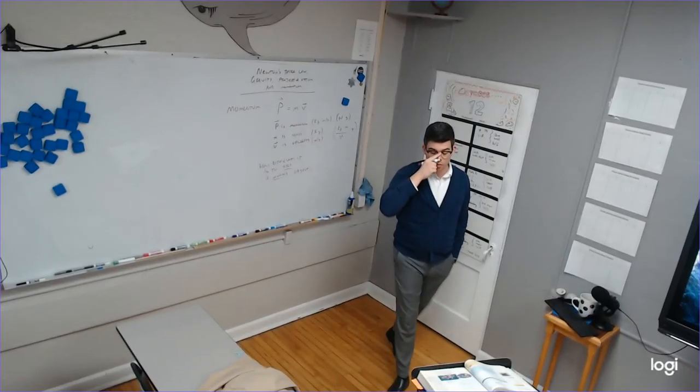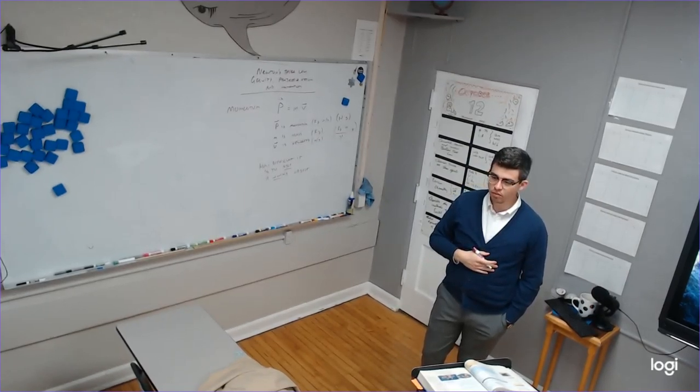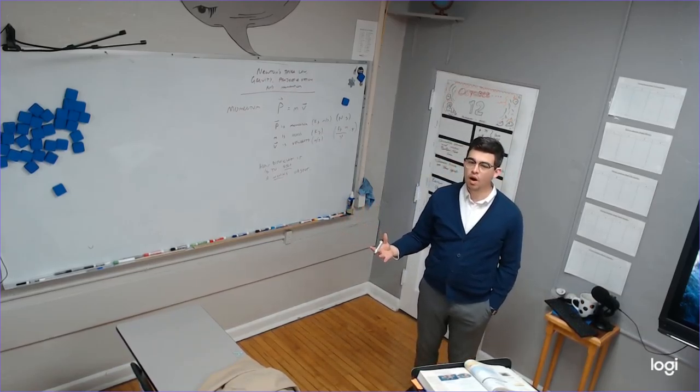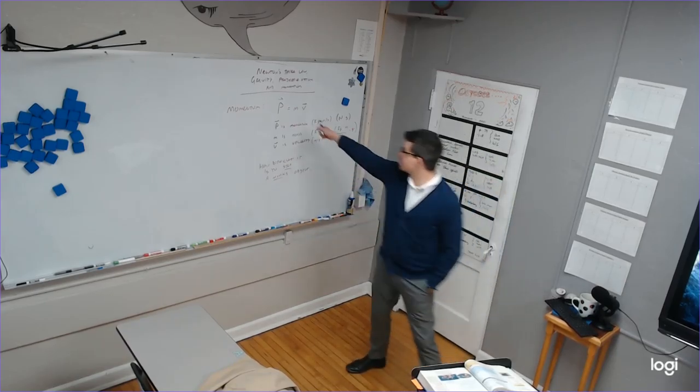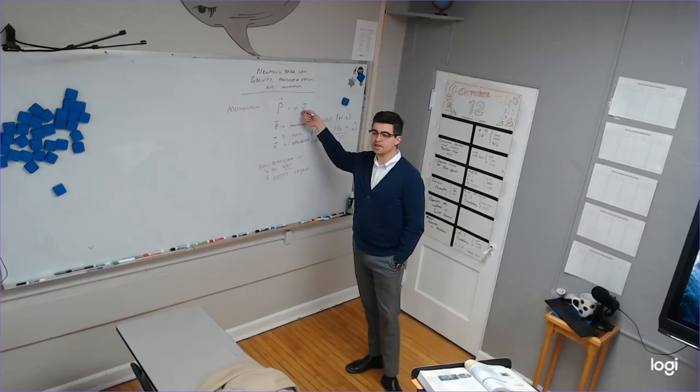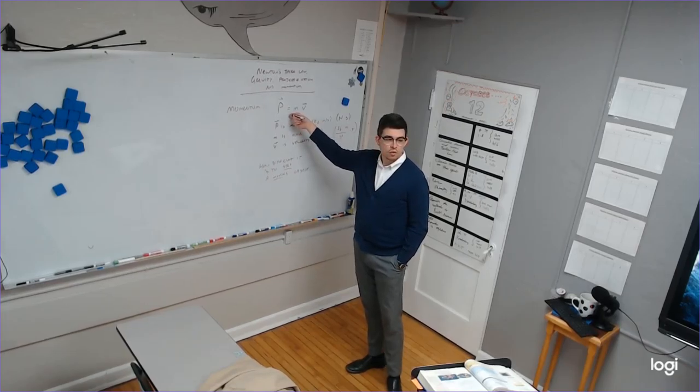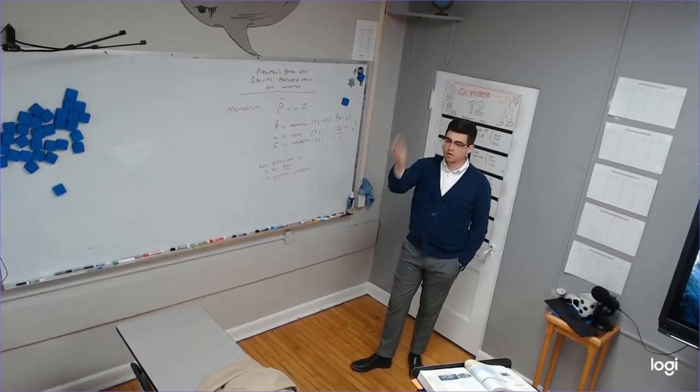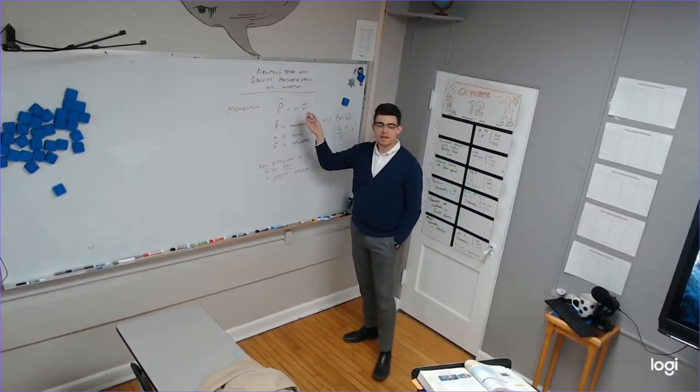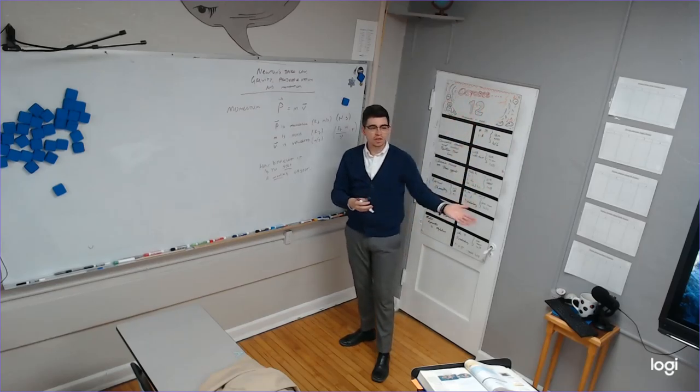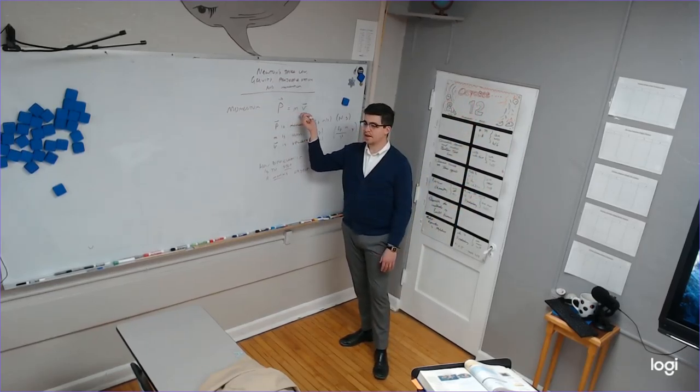Which has more momentum? Angie running around the track or Angie walking around the track? Running. Running, because her velocity is greater. Which has more momentum? Angie running around the track at 10 miles an hour or a semi-truck going at 10 miles an hour? Semi-truck. The semi-truck, because it has more mass. Which has more momentum? A semi-truck parked in the parking lot or Angie walking around the track? Angie walking around the track. Right, because the semi-truck's velocity is zero. Now, which has more inertia of those two things? The semi-truck, because it has more mass. Inertia depends only on mass. Momentum depends on mass and velocity. Okay? Okay.